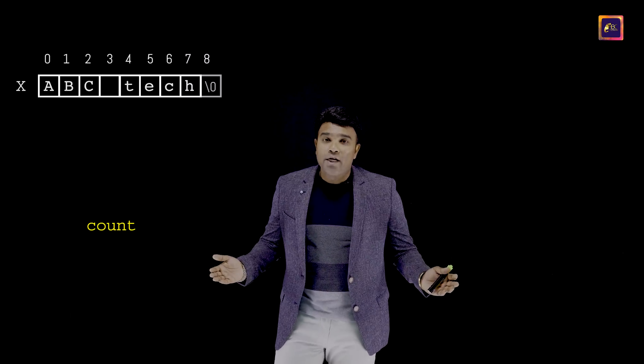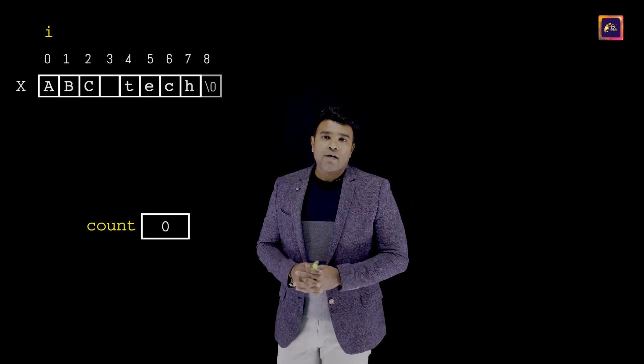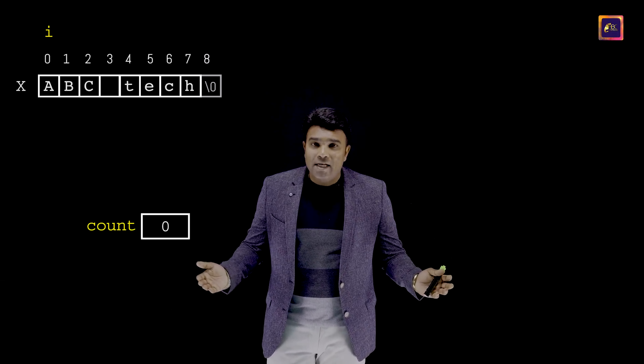To compute the length of the string, I need to create two variables: one variable called count, which I'll use to count the total number of characters in the string, and another variable i, which I'll use to travel along the array until I encounter the null character. Both variables are initialized to zero.